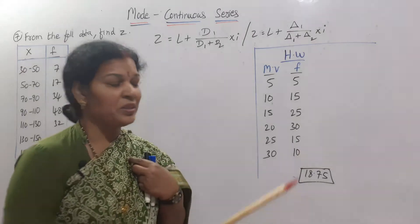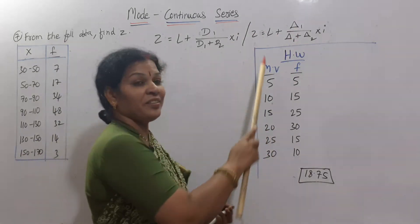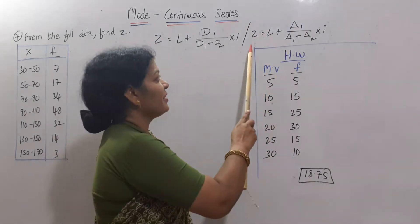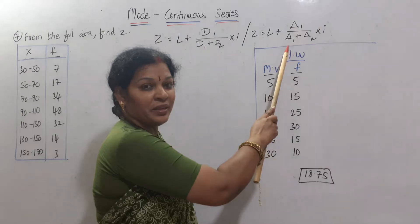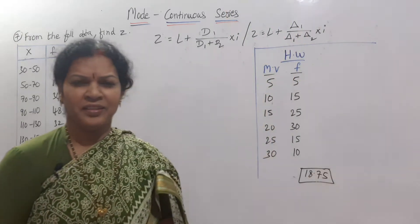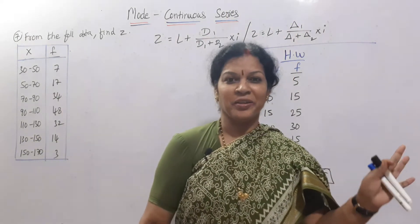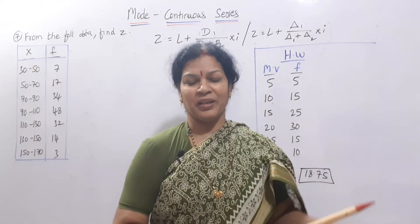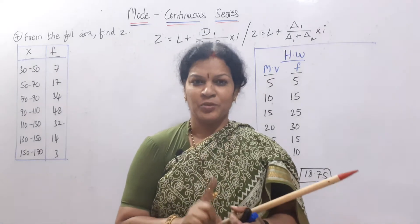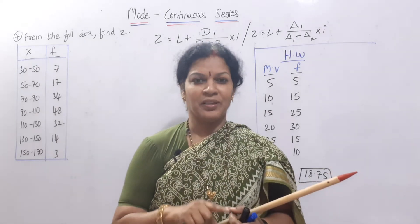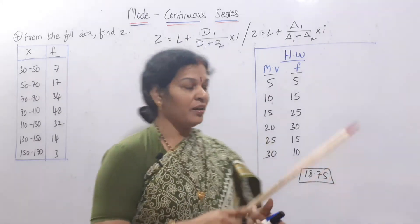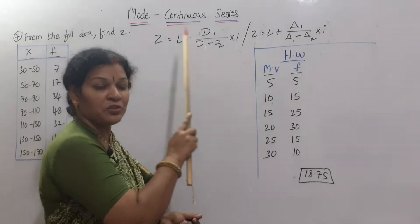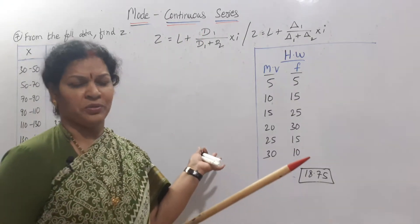Some textbooks use the notation with delta: Z = L + (Δ1 / (Δ1 + Δ2)) × i. This is the same formula — L plus delta 1 divided by delta 1 plus delta 2, multiplied by i. Whether written as d1/d2 or delta 1/delta 2, the methodology is the same. Check your textbook and follow whichever notation is given.